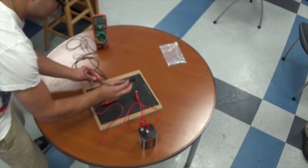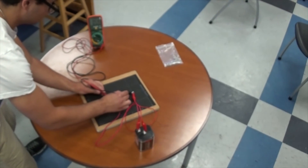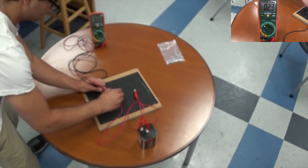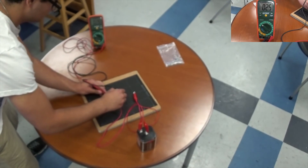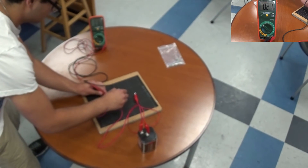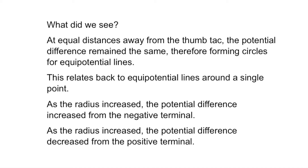Let's see this lab in action — keep an eye on the potentiometer. What did we see? At equal distances away from the thumbtack, the potential difference remained the same, therefore forming circles for each equipotential line.